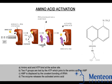Aminoacylation is the process of adding an aminoacyl group to a compound. It produces tRNA molecules with their CCA 3' ends covalently linked to an amino acid. Each tRNA is aminoacylated, or charged, with a specific amino acid by an aminoacyl tRNA synthetase. There is normally a single aminoacyl tRNA synthetase for each amino acid, despite the fact that there can be more than one tRNA and more than one anticodon for an amino acid.